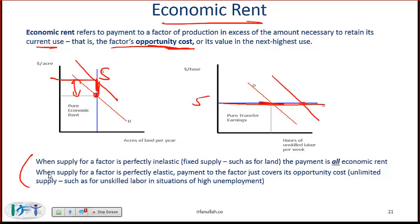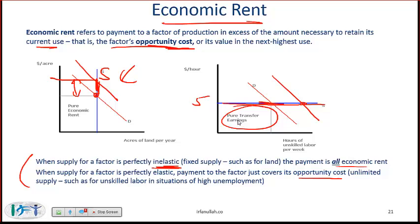When supply for a factor is perfectly inelastic, the payment is all economic rent. When supply for a factor is perfectly elastic, payments to the factor just cover its opportunity cost, so there is no economic rent. In the real world there will be some combination of economic rent and what's called pure transfer earnings, or the opportunity cost, and the more inelastic the supply curve, the higher the economic rent.